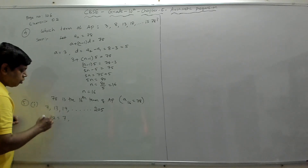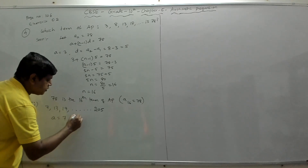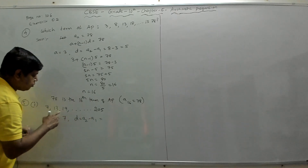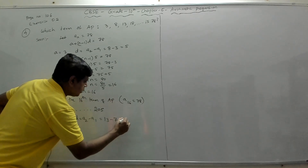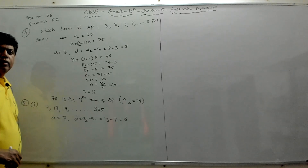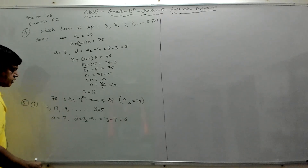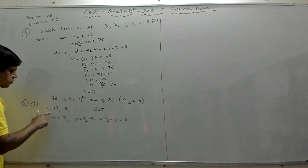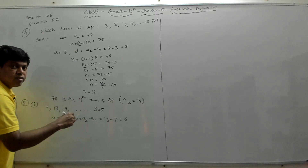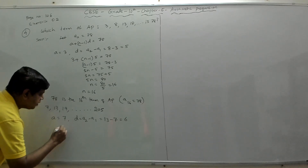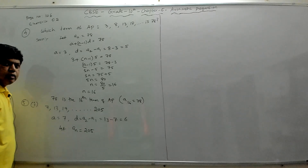To find the number of terms, first find a and d. The first term a is 7. The common difference d = a2 − a1 = 13 − 7 = 6. Now we assume 205 as the nth term: let an = 205, and we have to find n.